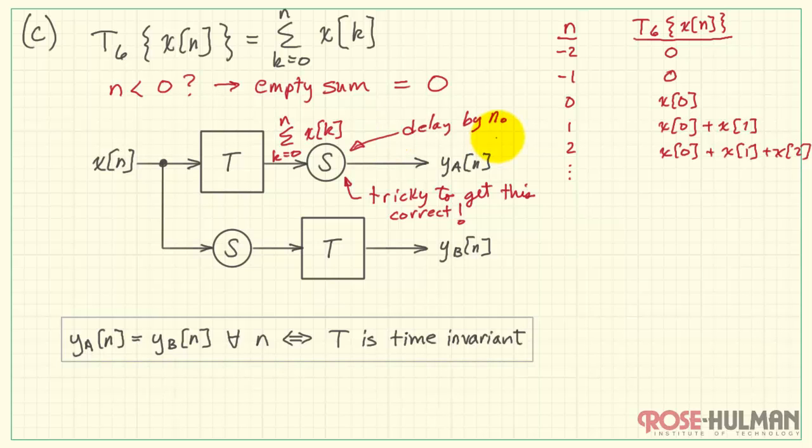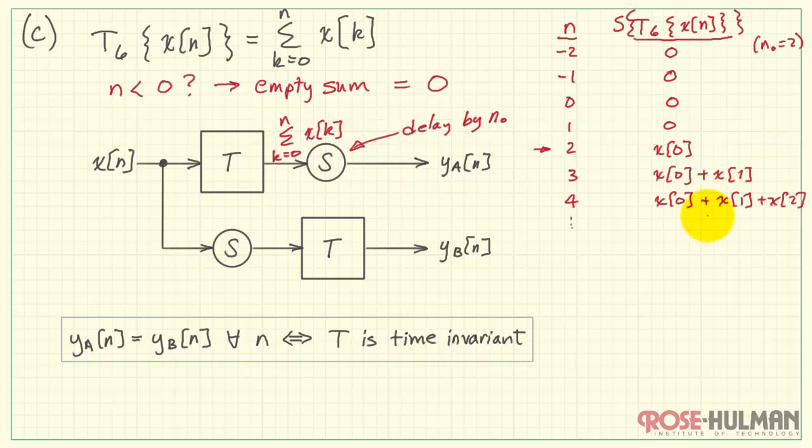Now, when we apply the shift operation, we want to delay this entire sequence by n_0. For this specific picture, my shifted version is going to be based on n_0 specifically being equal to 2, and that will delay the whole sequence to time value n equals 2.